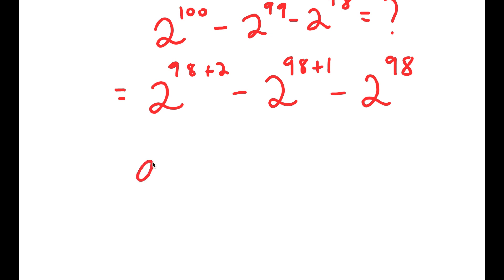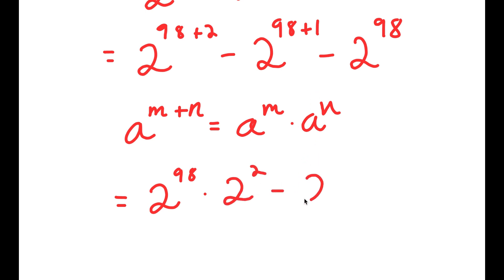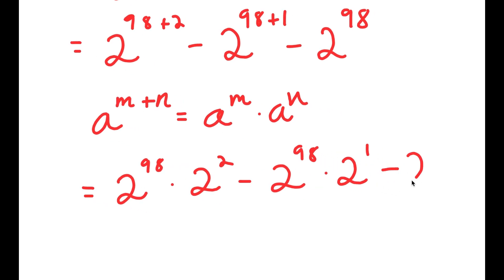Now I'm going to use the property of exponents that states that a to the power of m plus n equals a to the power of m times a to the power of n. So 2 to the power of 98 plus 2 equals 2 to the power of 98 times 2 to the power of 2. 2 to the power of 98 plus 1 equals 2 to the power of 98 times 2 to the power of 1. And then I have this minus 2 to the power of 98 at the end.